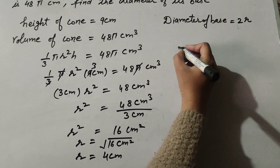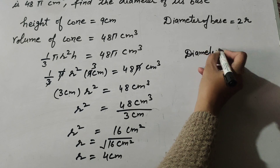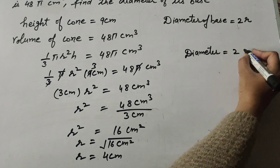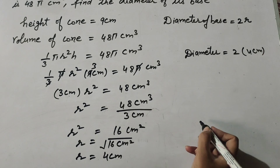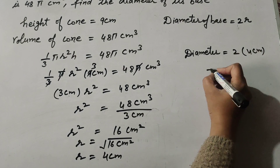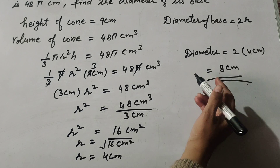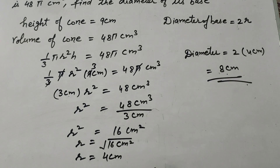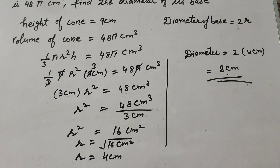Now we find the diameter of the base. Diameter = 2r = 2 × 4 centimeters = 8 centimeters. So the diameter of the base of the right circular cone is 8 centimeters. Thanks for watching — like, comment, share my video, and subscribe to my YouTube channel.